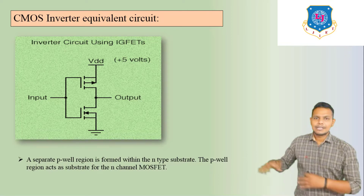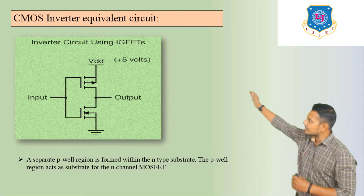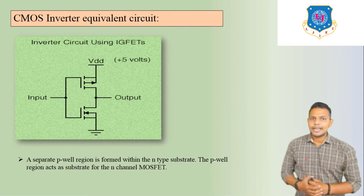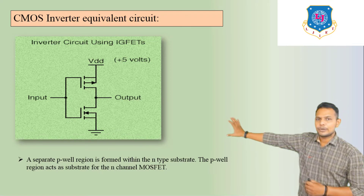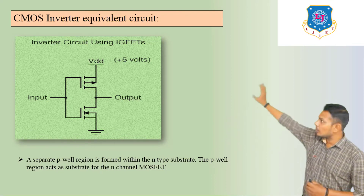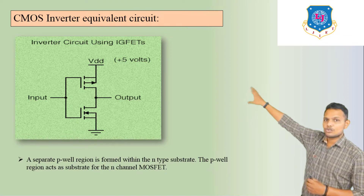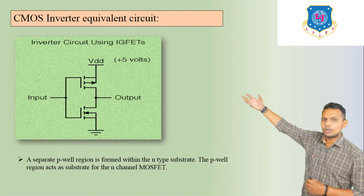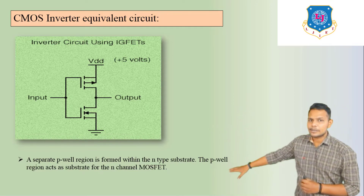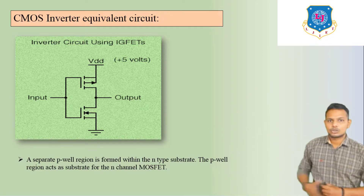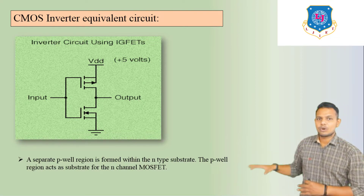This is the equivalent circuit of the CMOS inverter. Here we can see the inverter circuit using IGFETs. In the center we connect the output. Above, we can see VDD — that means drain voltage which is +5 volts. Here we can see VDD where the input is connected, and the source terminal is grounded. This is the connection known as the CMOS inverter.